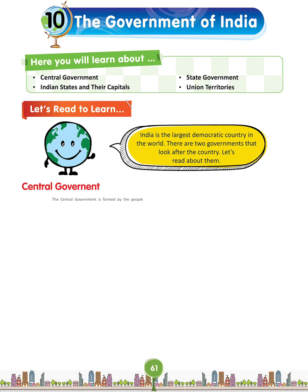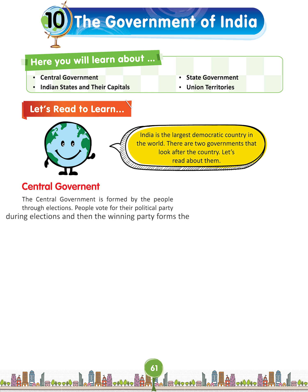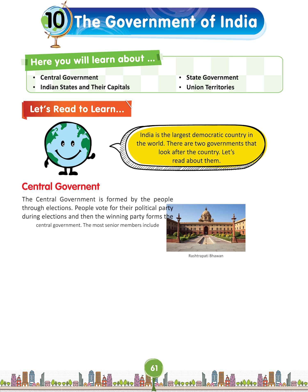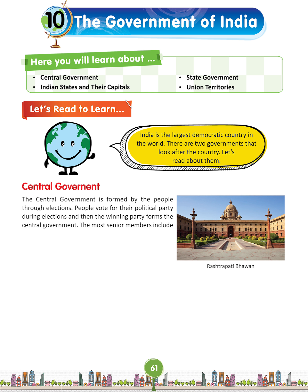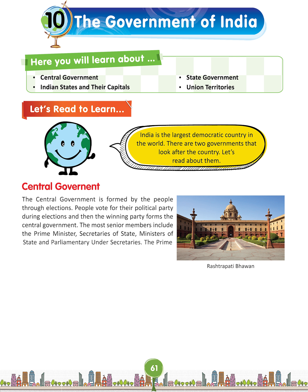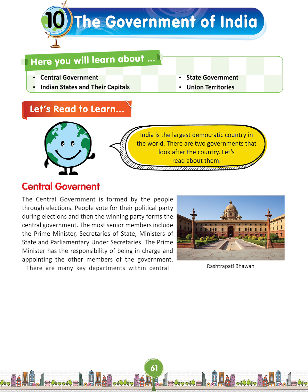Central Government. The central government is formed by the people through elections. People vote for their political party during elections and the winning party forms the central government. The most senior members include the Prime Minister, Secretaries of State, Ministers of State, and Parliamentary Undersecretary. The Prime Minister has the responsibility of being in charge and appointing the other members of the government. There are many key departments within central government and they all play a vital but very different role in running the country.